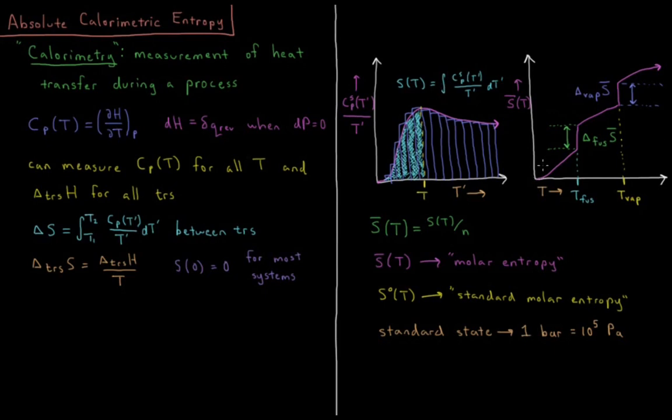We can do that for the various phases that we need to measure in order to get the entropy of the substance going from zero to the melting point. Then we measure the heat that occurs going from solid to liquid and divide that by the temperature of the transition.